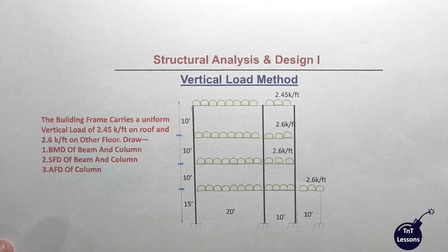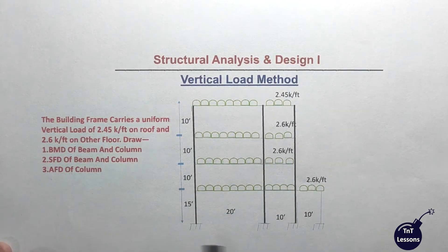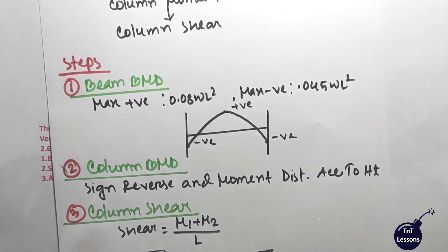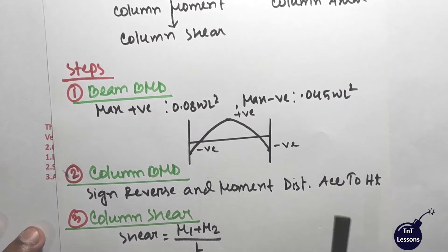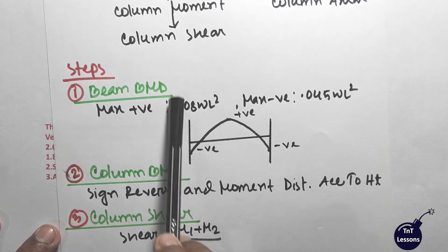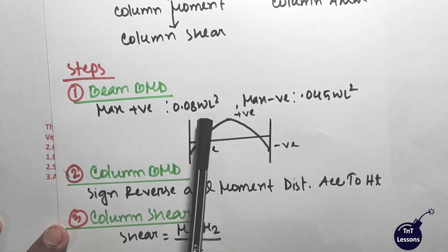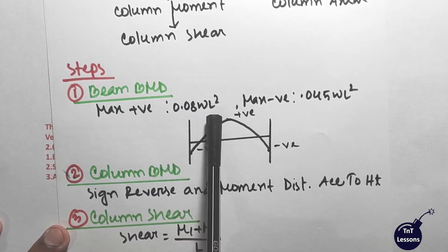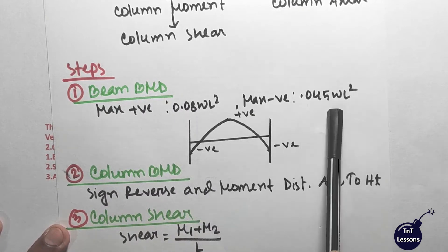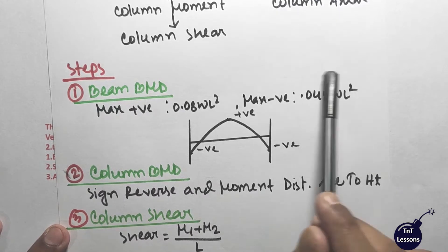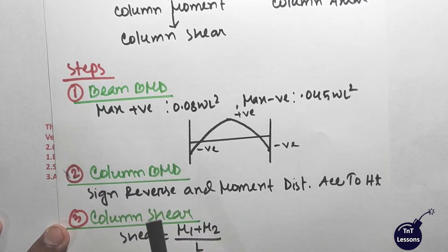So, let's start with the question. Let's start with this type of example and look at the vertical load steps. The first step was to draw a bending moment diagram. How do we draw a bending moment diagram? You will get 0.08 WL squared, and for the maximum negative bending moment, you will get 0.045 WL squared.